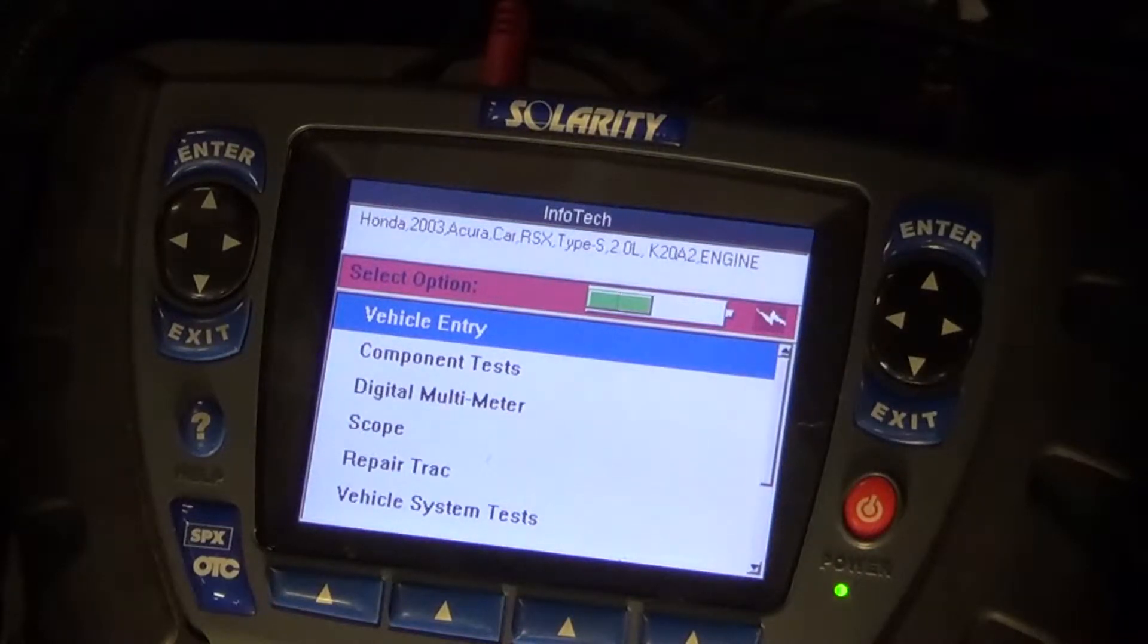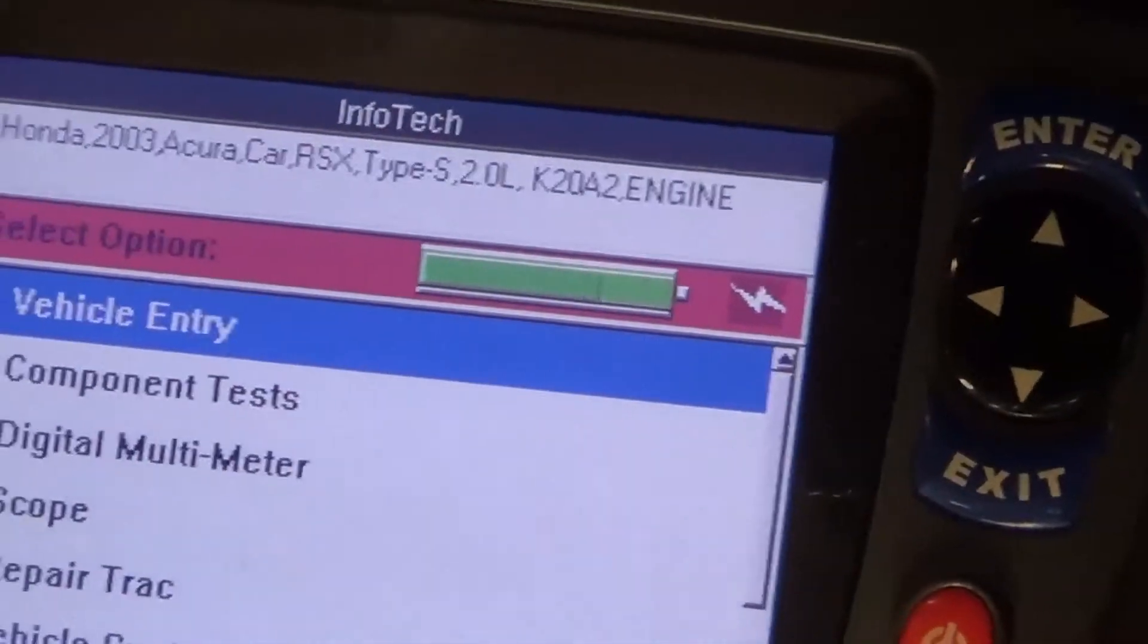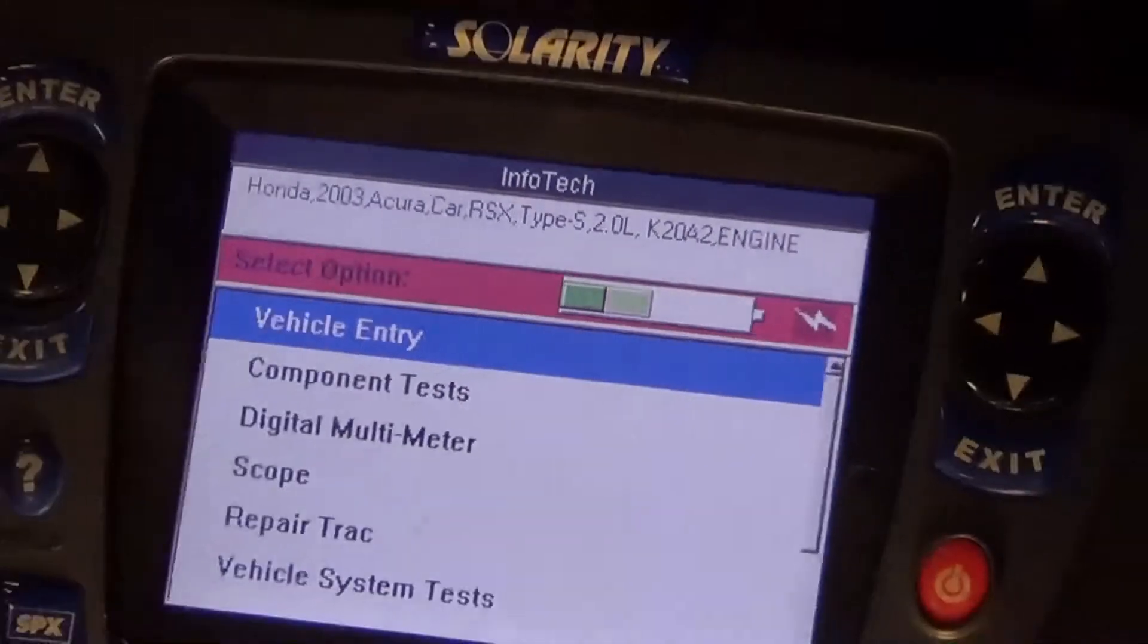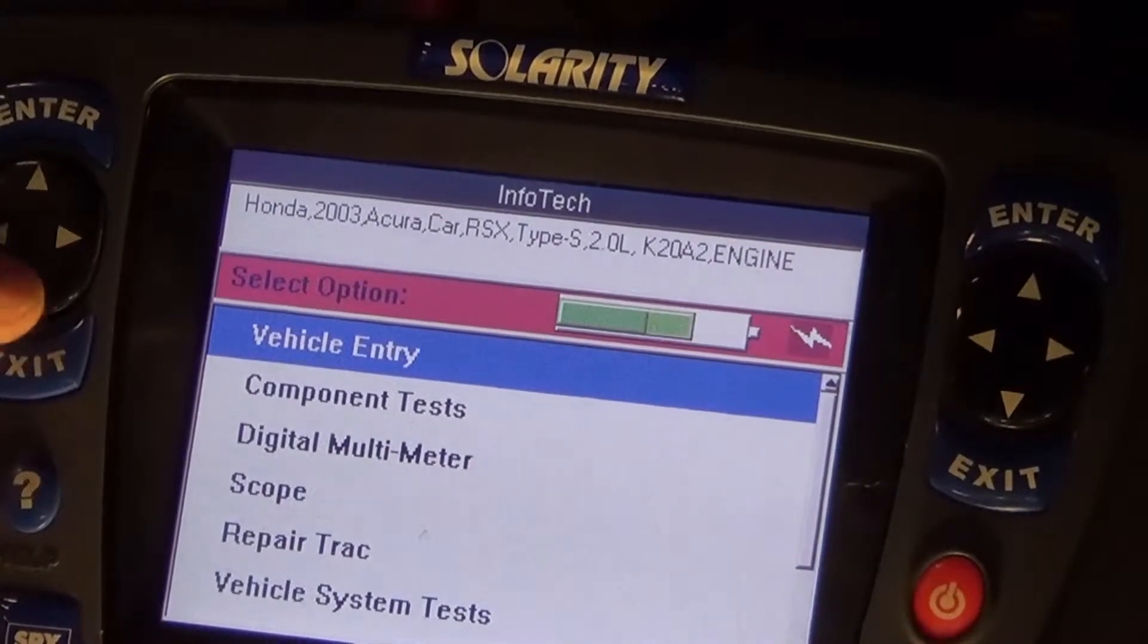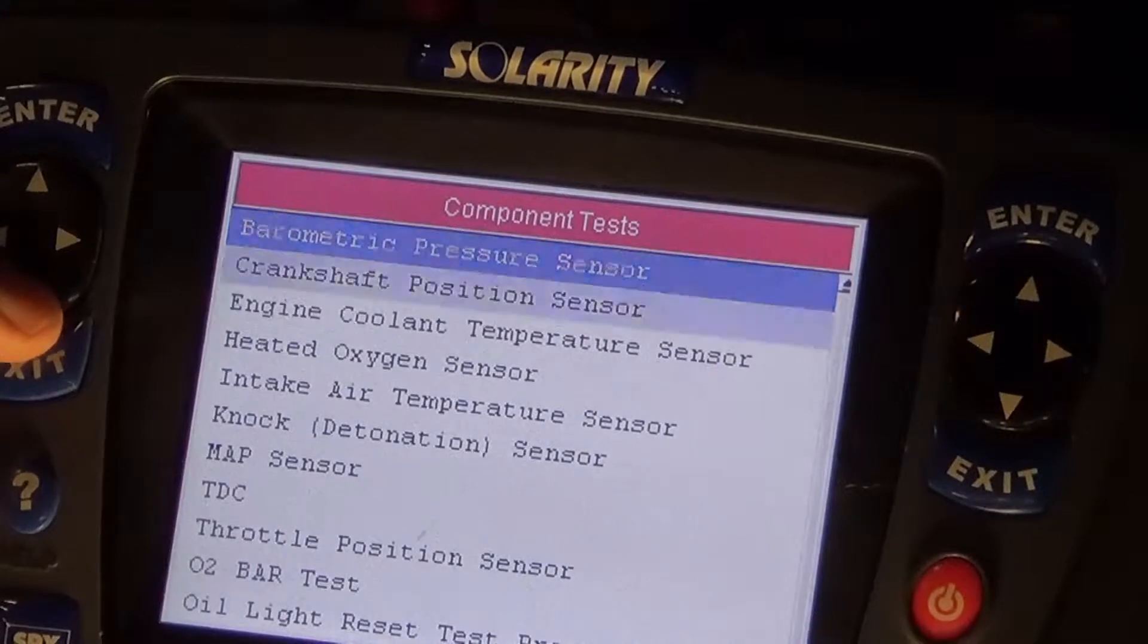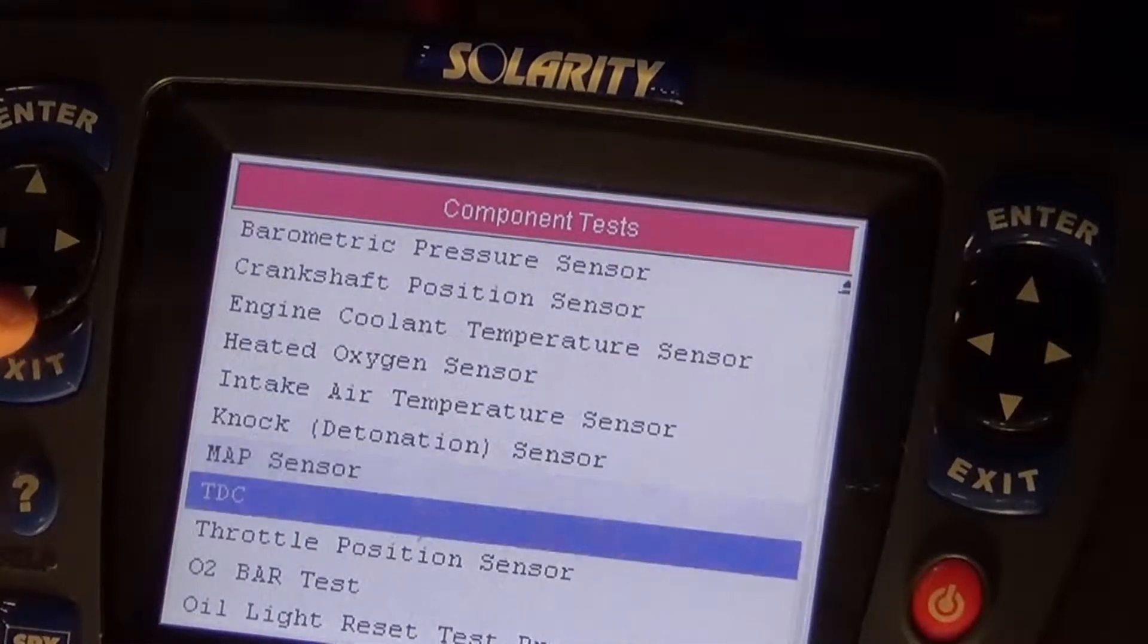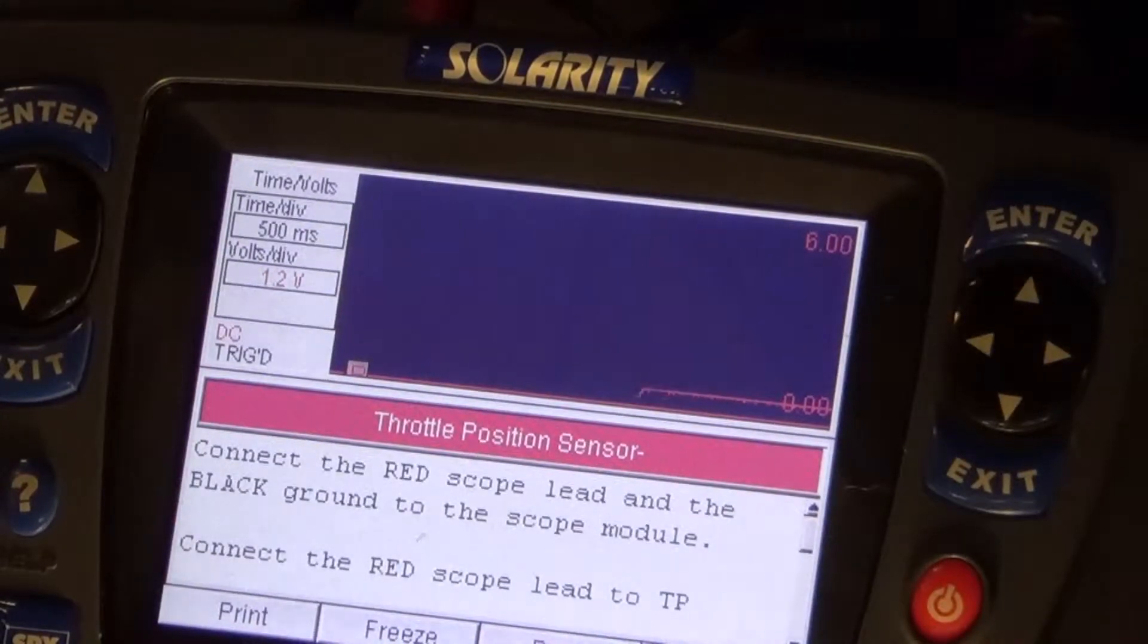Alright, that's a little bit better. Let me kind of zoom in on here just a touch. Now I've got this just in the opening page, opening menus here. I'm going to go ahead and use the scope, but I want to show you what the component test looks like and why I prefer not to use it in doing a potentiometer sweep test. So I'm going to go down, select the component test, and if I go down there's a throttle position sensor. So we'll look at that.